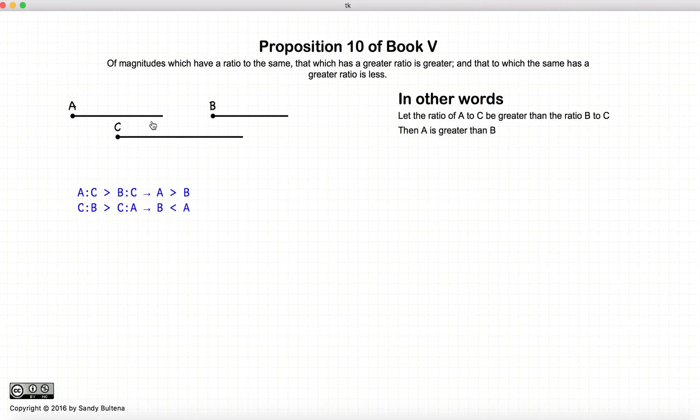And in this proposition, we again have two ratios, A to C and B to C. And the relationship between those two ratios is that A to C is larger than B to C, or, which is the same thing, C to B is greater than C to A.